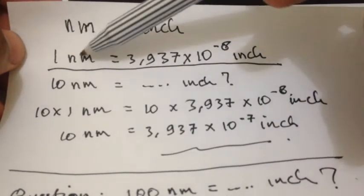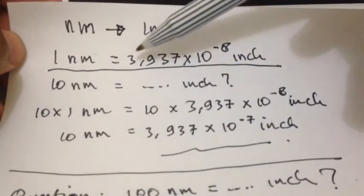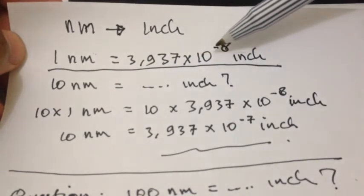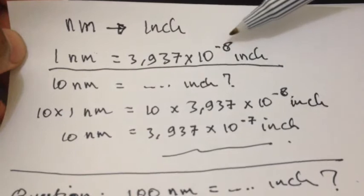We have the basic rule. 1 nanometer is equal to 3.937 × 10^-8 inch.